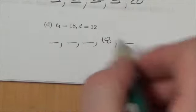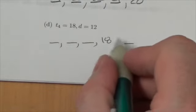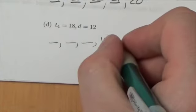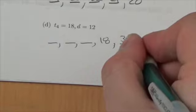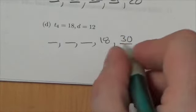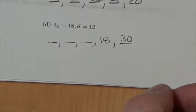Well, if we know that the d value is 12, to go from the fourth term to the fifth term, we are simply going to add 12, and that's going to give us 30. So we know that the fifth term of that sequence is going to be 30.